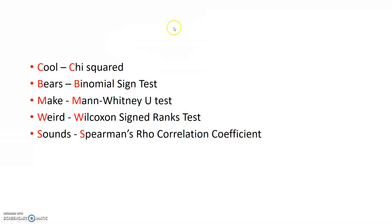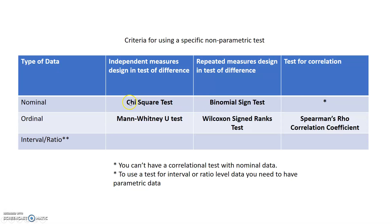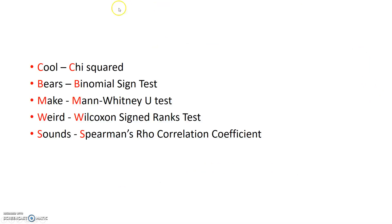Here is a quick way of remembering that table — I just came up with this. It's kind of rubbish but it will help you remember: cool bears make weird sounds. Chi-squared, binomial sign test, Mann-Whitney U test, Wilcoxon sign ranks test, and Spearman's Rho correlation coefficient — they all start with the letter of each word in that phrase. So going left to right across the table: cool bears make weird sounds. As long as you remember the names of the tests alongside the letters, you'll be fine.